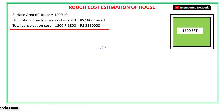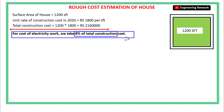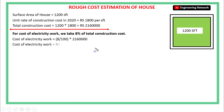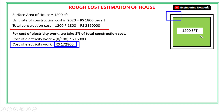For electricity work in any house, we usually take 8% of the total construction cost. Here the total construction cost is 21,60,000 rupees. So the cost of electricity work is equal to 8 divided by 100, multiplied by 21,60,000, and the total cost of electricity work will become 1,72,800 rupees.